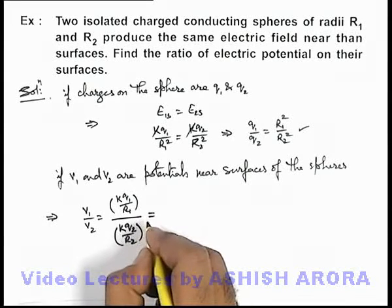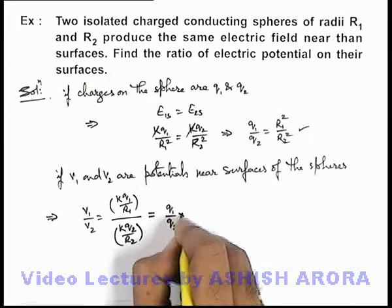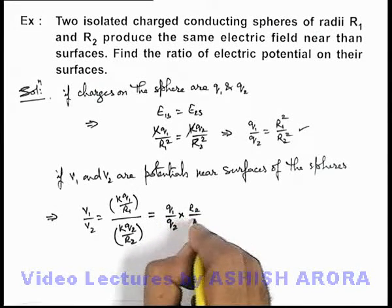So on simplifying the result we are getting is q1 by q2 multiplied by R2 by R1.